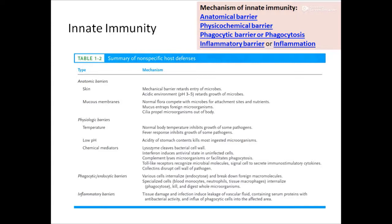Low pH is also inhibitory to ingested microorganisms. Within our stomach, acidity is maintained at a pH of about 1 to 3 so that microorganisms ingested during eating are killed when they reach the stomach. Various chemical mediators also play an important role in the innate immune system, and we will deal with these now.